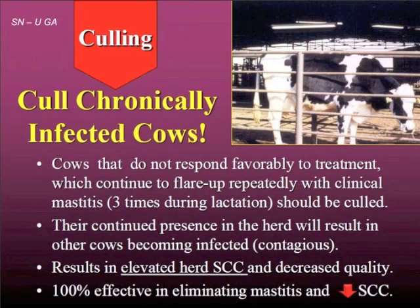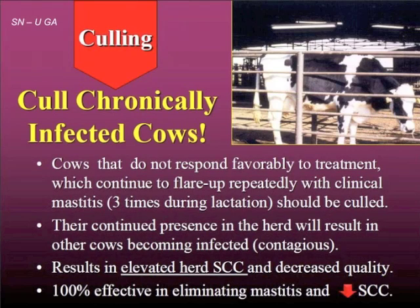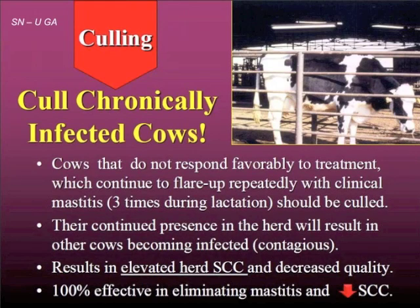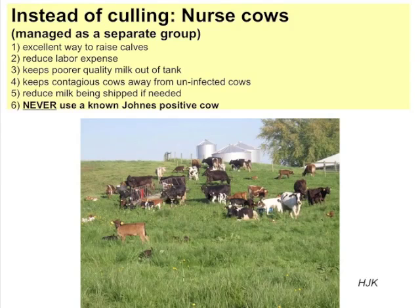Sometimes culling is necessary. For an older cow with multiple quarters of Staph aureus, firm quarters indicating scar tissue, there is virtually no chance of a cure. Culling is 100% effective. Sometimes herds that get rid of their worst cows find their milk production doesn't change much, or even goes up, because the remaining cows can eat better with less competition.